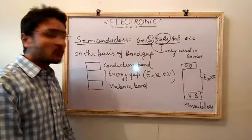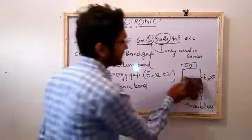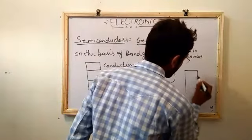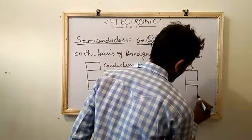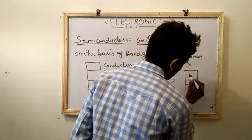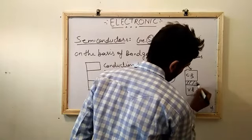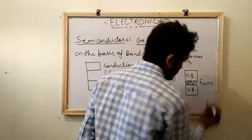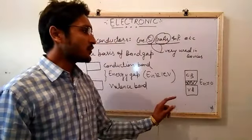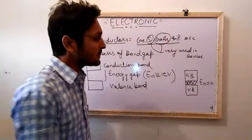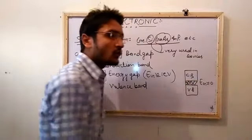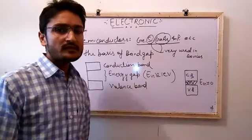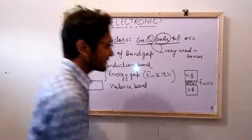If the band gap is reduced — just like here — the valence band and conduction band with an energy gap nearly zero, these types of materials are known as conductors, because the band gap is overlapping. All materials which have a band gap overlapping or nearly zero are known as conductors.